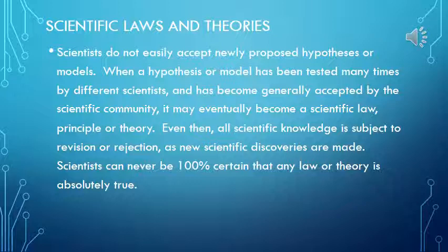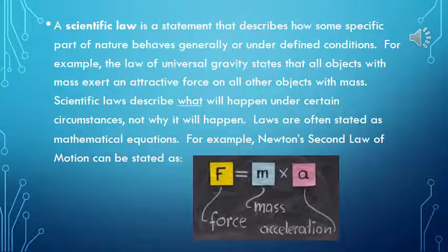Scientists do not easily accept newly proposed hypotheses or models. When a hypothesis or model has been tested many times by different scientists and has become generally accepted by the scientific community, it may eventually become a scientific law, principle, or theory. Even then, all scientific knowledge is subject to revision or rejection as new scientific discoveries are made. Scientists can never be one hundred percent certain that any law or theory is absolutely true.